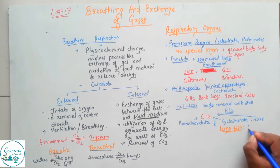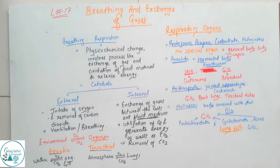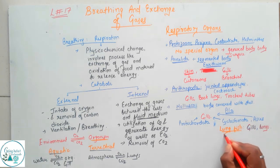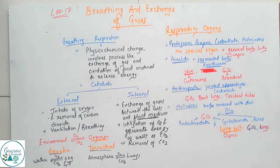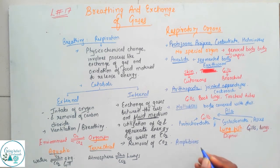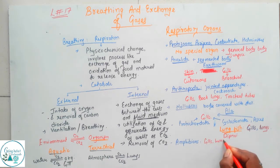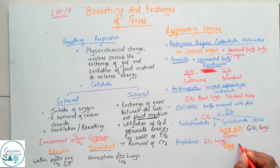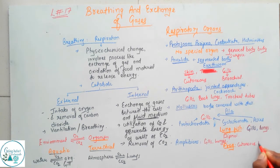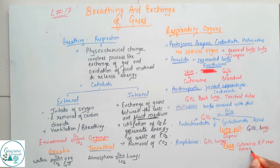Lungfish — also called Dipnoi — has both gills and lungs for respiration. If you are talking about Amphibians, they can use gills or lungs. In the case of a frog specifically, there can be cutaneous respiration, bucco-pharyngeal respiration, or pulmonary respiration — respiration through the lungs.